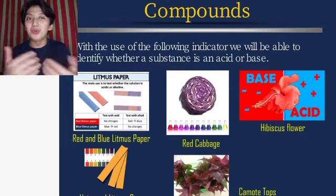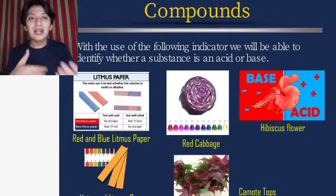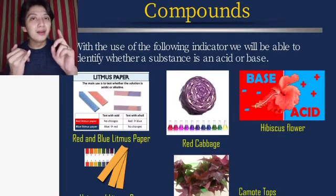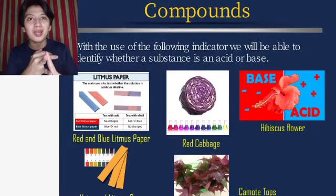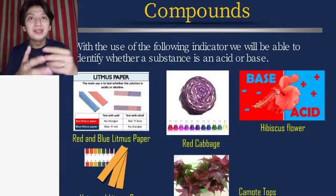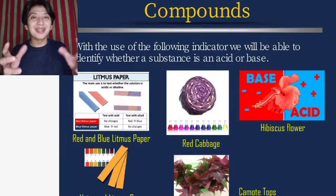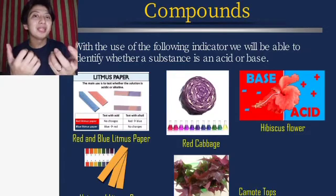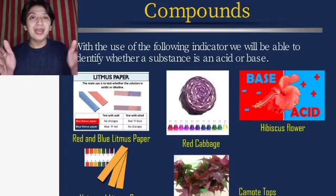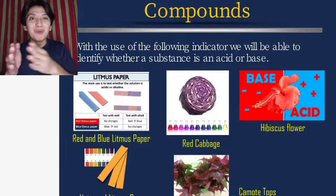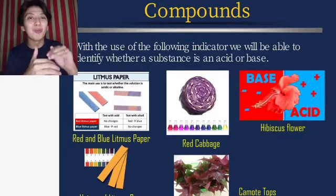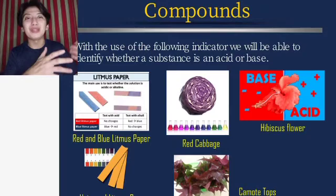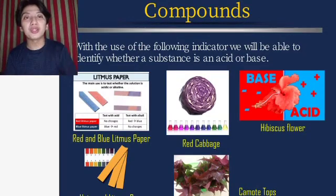The universal litmus paper can change colors — from red, orange, yellow, green, blue, to violet — representing different positions on the pH scale. From 1 to 6 it shows warmer colors, and from 7 to 14 it shows cooler colors, so it can portray the entire pH range.